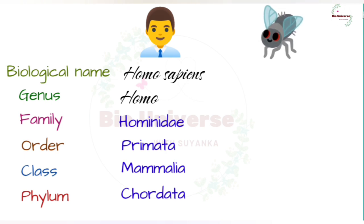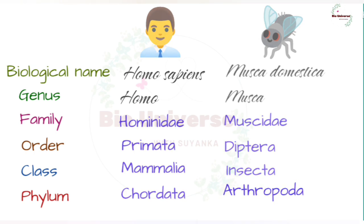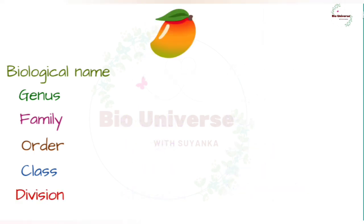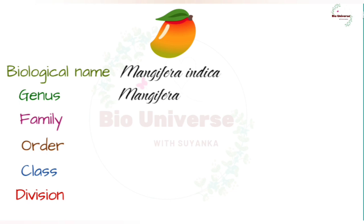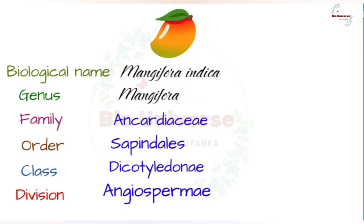The biological name of housefly is Musca domestica, and it belongs to genus Musca, family Muscidae, order Diptera, class Insecta, and phylum Arthropoda. The biological name of mango is Mangifera indica, and it belongs to genus Mangifera, family Anacardiaceae, order Sapindales, class Dicotyledonae, and division Angiospermae.